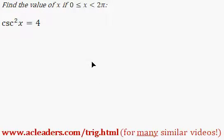Find the value of x if x is between 0 and 2 pi, and we're looking for x if cosecant squared of x is equal to 4.